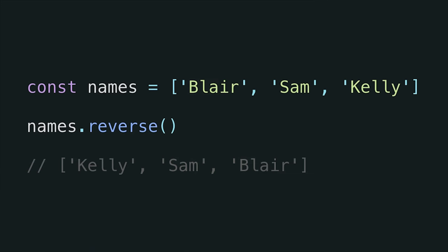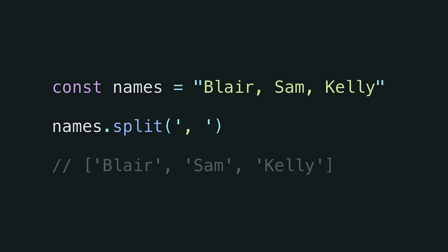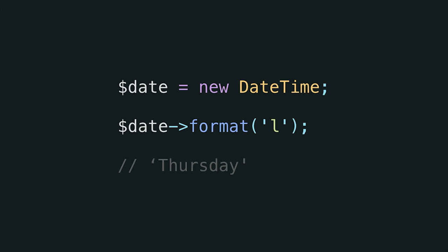Let's look at an example. Here's some JavaScript: we have an array of names and we want to reverse it, so we just call names.reverse and now we have a reversed array. Or we have a big string with comma-delimited names and we want to split that into an array — we just call the split method on the string, pass through the delimiter, and get back the array. Here's a PHP example: we have a DateTime object and we want to format it to show the day of the week, so we call the format method on the date, pass through the format string, and we get Thursday.